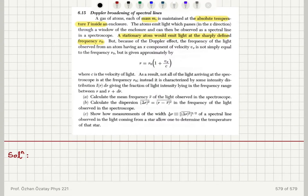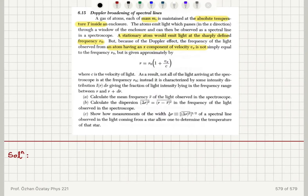But because of the Doppler effect, the frequency of the light observed from an atom having an x component of velocity vx is not simply equal to ν₀, but is approximately given by ν = ν₀(1 + vx/c), where c is the velocity of light. As a result, not all of the light arriving at the spectroscope is at the frequency ν₀. Instead, it is characterized by some intensity distribution giving the fraction of light intensity lying in the frequency range between ν and ν + dν.